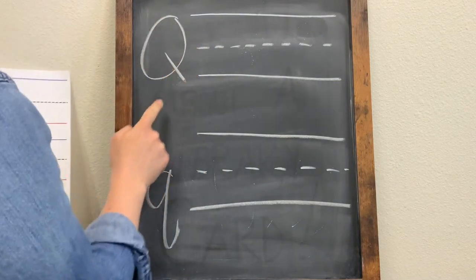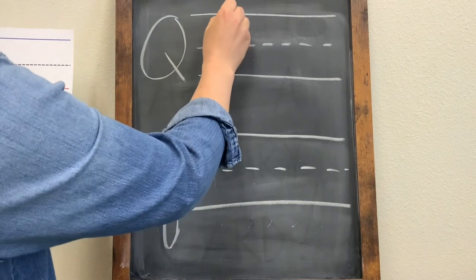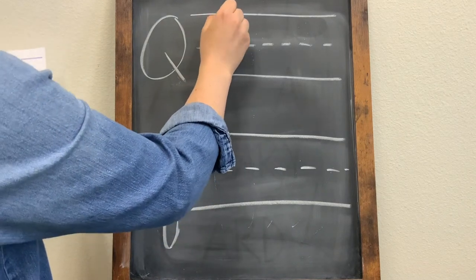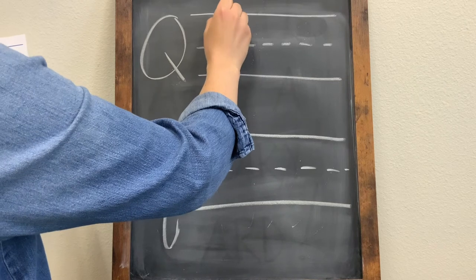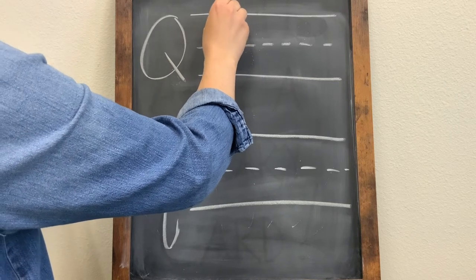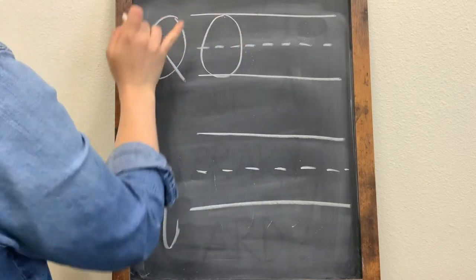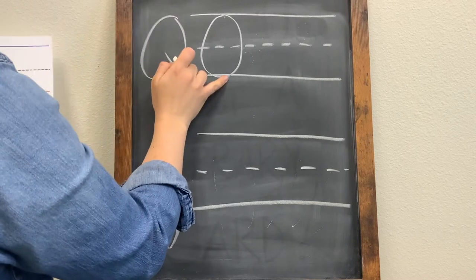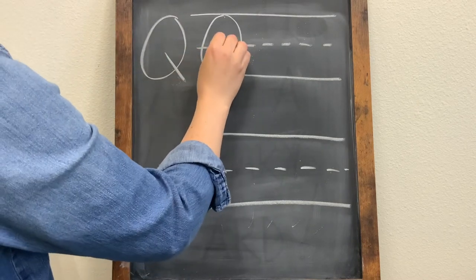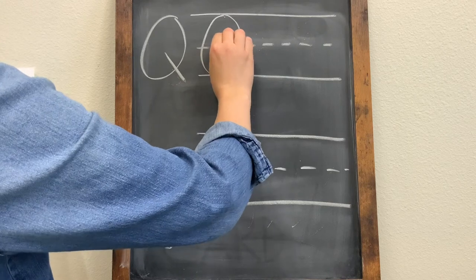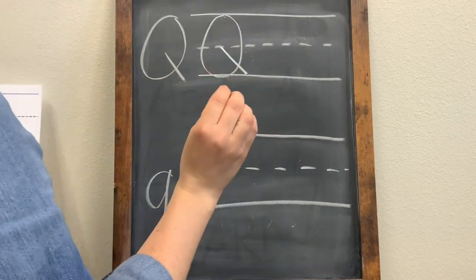For an uppercase letter Q, first we are going to draw the circle, or O — it looks very similar to the letter O. So we're going to start up here and go the whole way around touching both the top and the bottom lines, and then we are going to make a diagonal line from the middle line all the way down to the bottom.